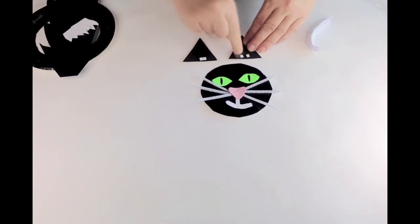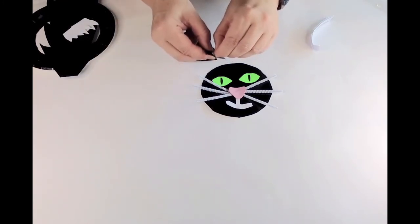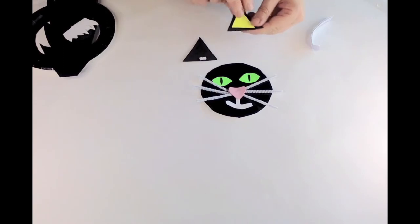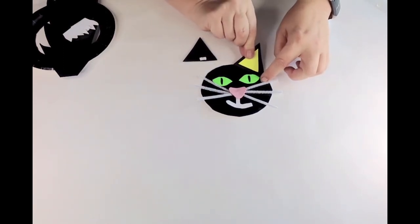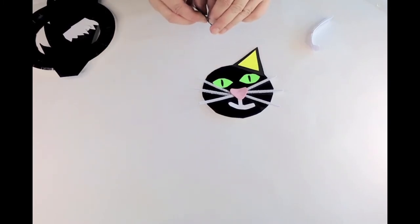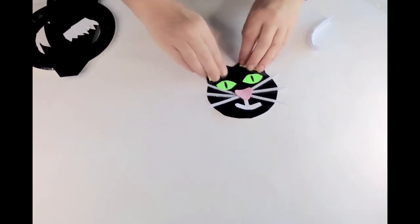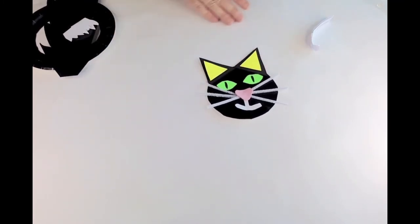Peel the backs off like we did before if you did the pumpkin sun catcher. And then we can position it on the cat's head. So it definitely looks like a cat now. Mine's a boy cat and he's got his ears.